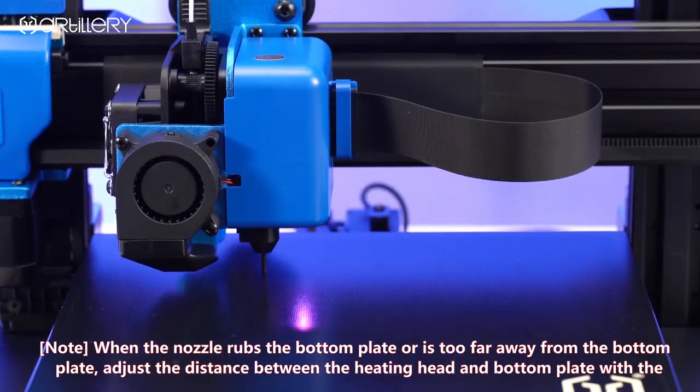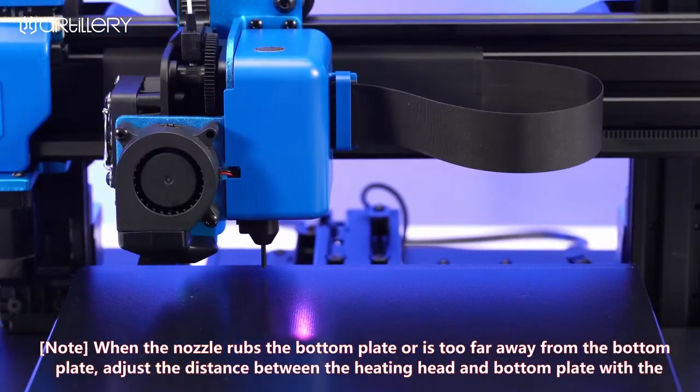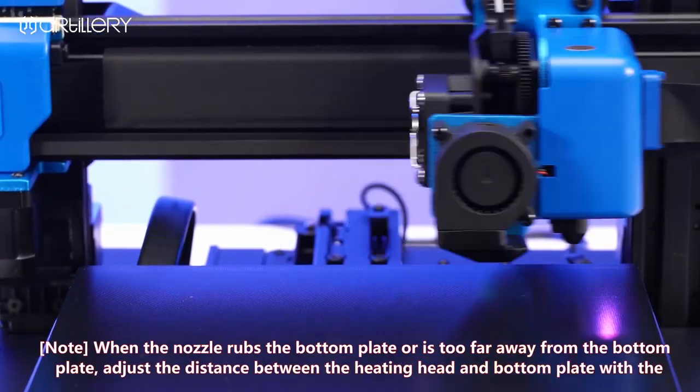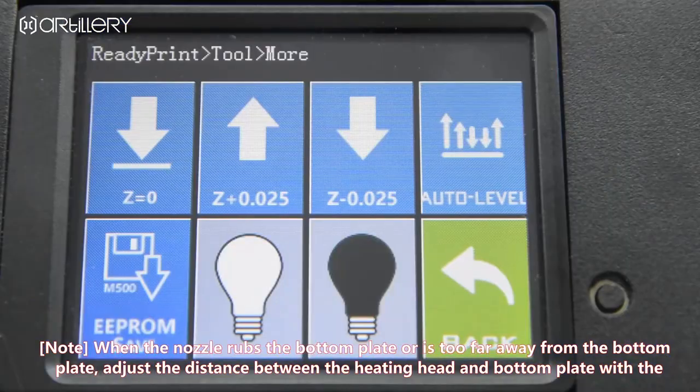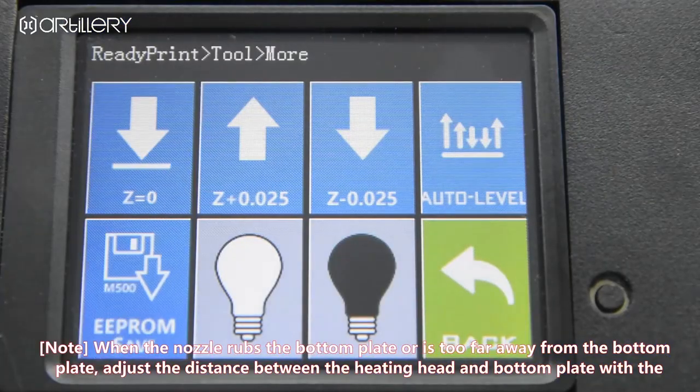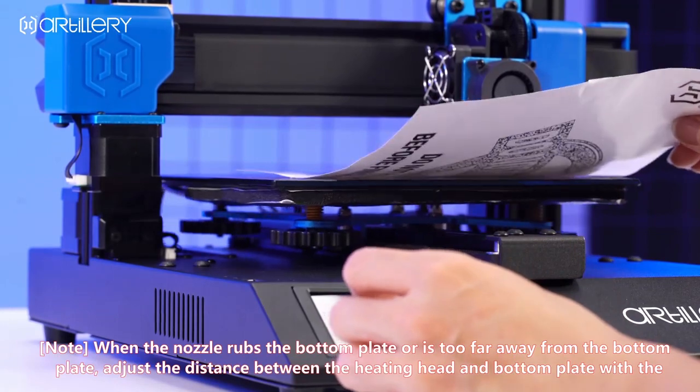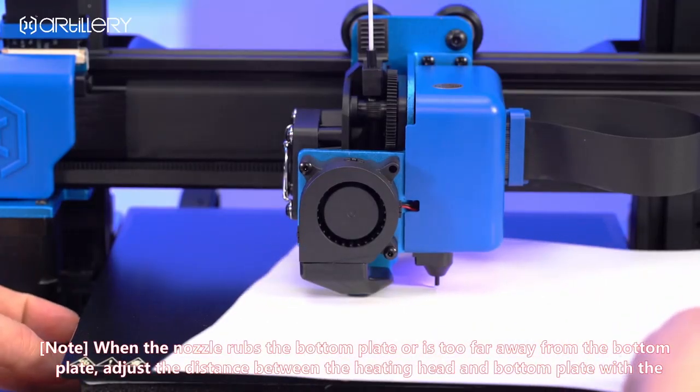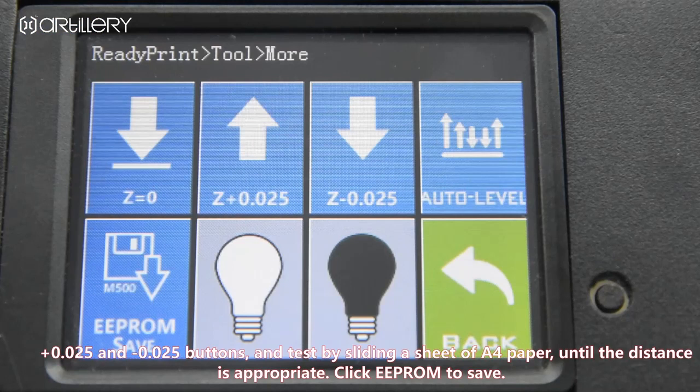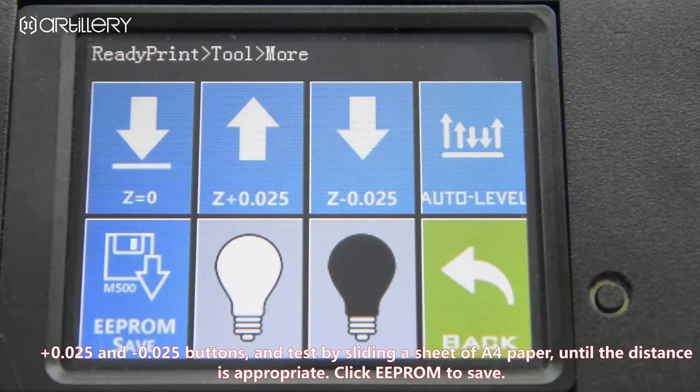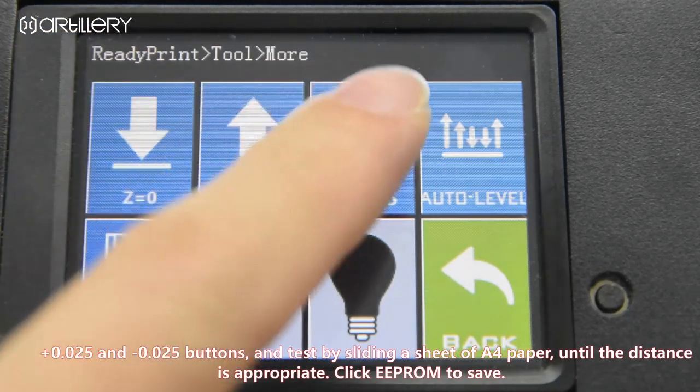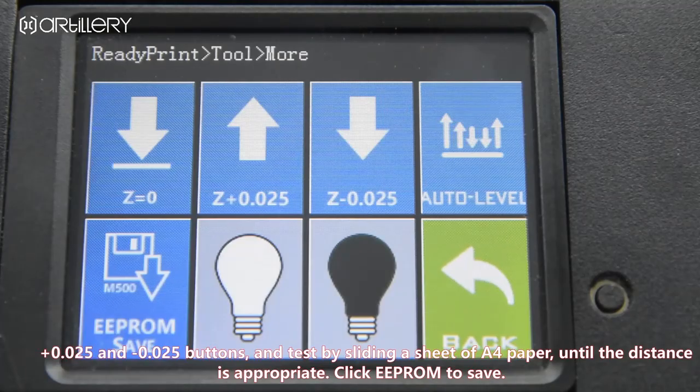Note, when the nozzle wraps the bottom plate or is too far away from the bottom plate, adjust the distance between the heating head and the bottom plate with the 0.025 and -0.025 buttons. Test by sliding a sheet of A4 paper until the distance is appropriate. Click EPROM to save.